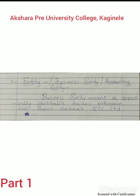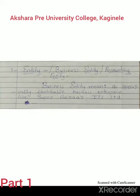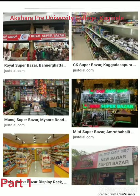Out of these, the first one is entity — also called business entity or accounting entity. What is entity? Business entity means a specifically identifiable business enterprise, like Superbazaar or ITC Limited. So entity is nothing but a specific, identifiable place. This picture shows the example of an entity — that place is simply called an entity in the world of accounting.